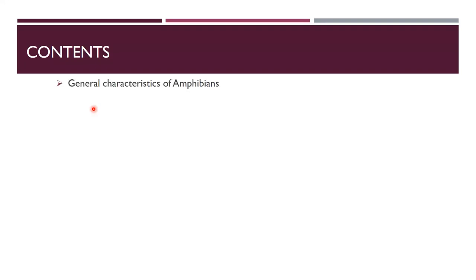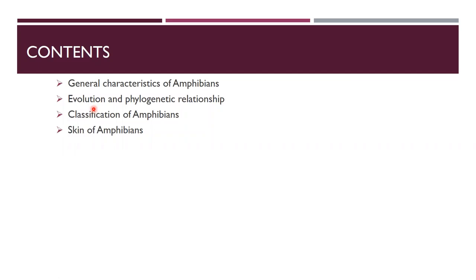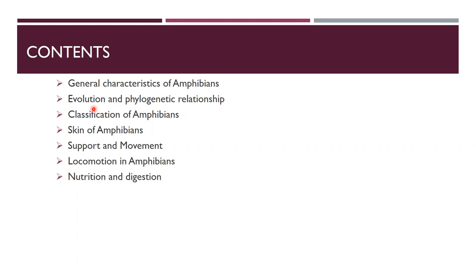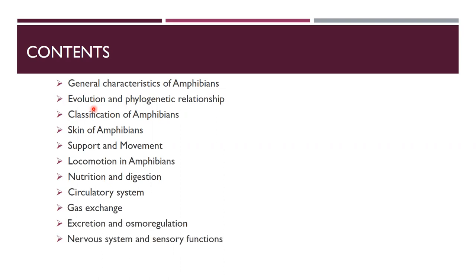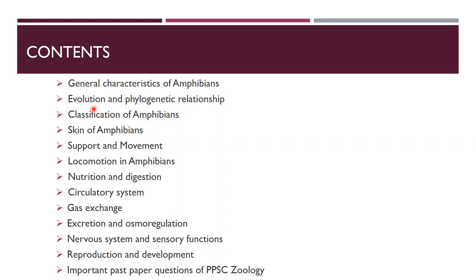The contents we're going to discuss include the general characteristics of amphibians, their evolution and phylogenetic relationship, classification, skin of amphibians, their support and movement, locomotion, nutrition and digestion, circulatory system, gas exchange, excretion and osmoregulation, nervous system and sensory functions, reproduction and development, and important past paper questions of PPSC Zoology.